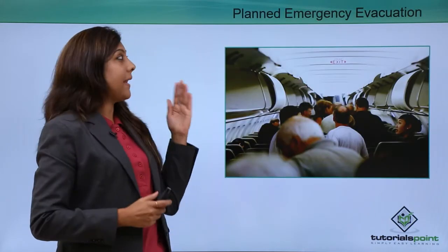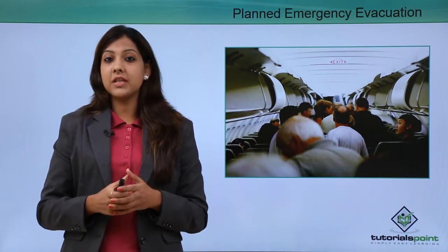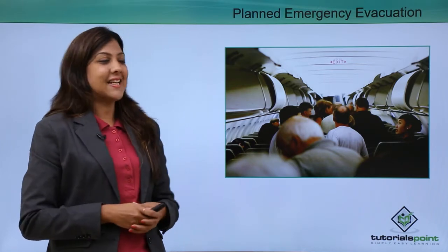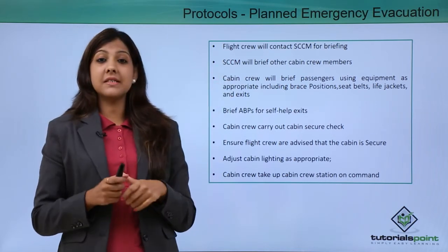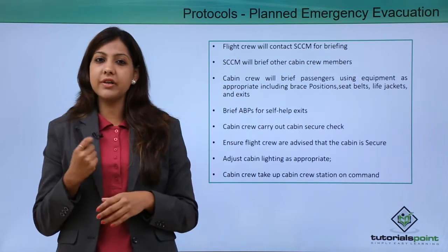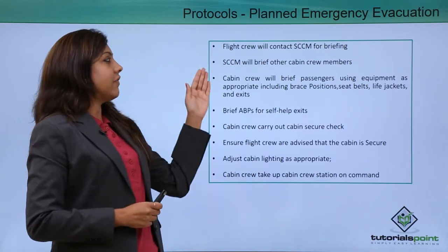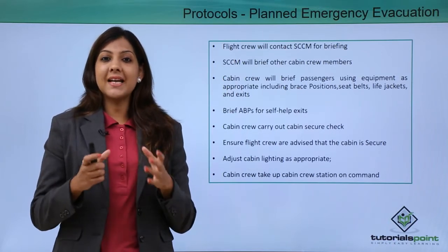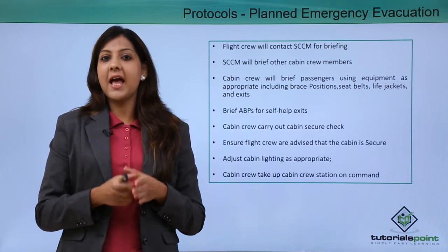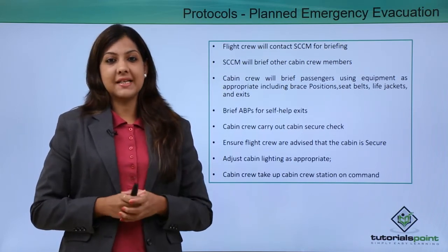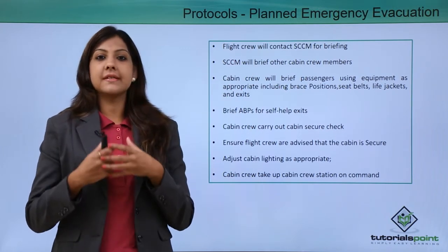In a planned emergency evacuation, the pilot provides information about the emergency to the cabin crew. The flight crew will contact the senior cabin crew member immediately. As soon as the senior cabin crew member is informed by the pilot, she will brief the other cabin crew members, calling everybody to the forward galley — the front galley of the aircraft — to communicate what the pilot has told her.